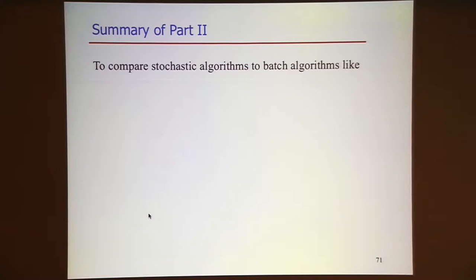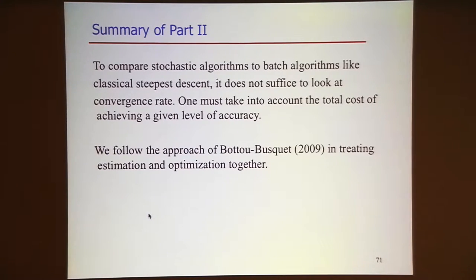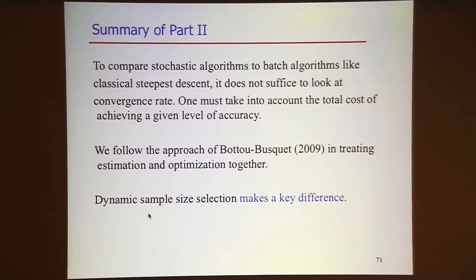To compare methods for machine learning—in particular to compare stochastic and batch methods—it does not suffice to look at the convergence rate or the number of iterations. One must take into account the total cost of achieving a certain level of accuracy. We followed the approach of Bottou and Bousquet in treating estimation and optimization together, and found that dynamic sample sizes make a measurable difference theoretically in establishing work complexity bounds and blur the lines about what is theoretically best.